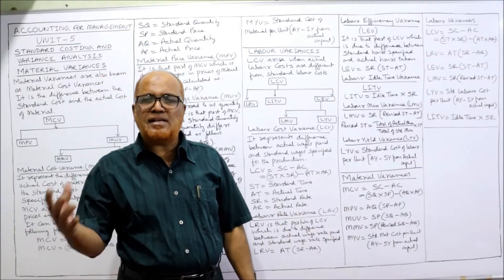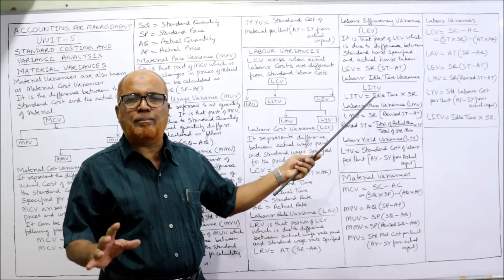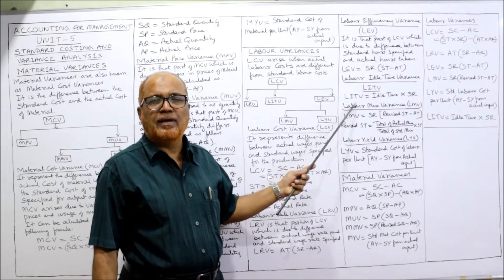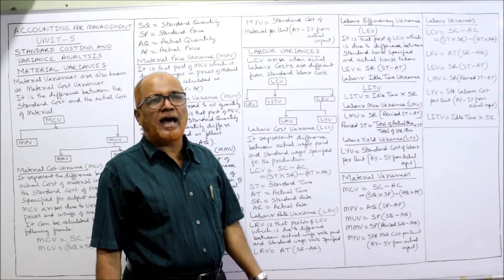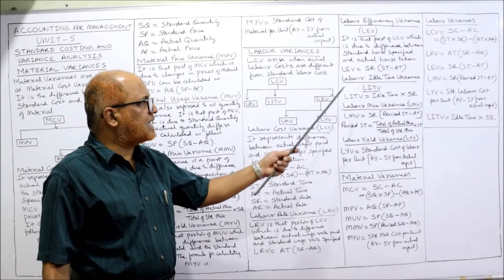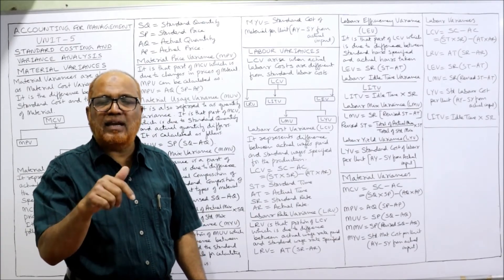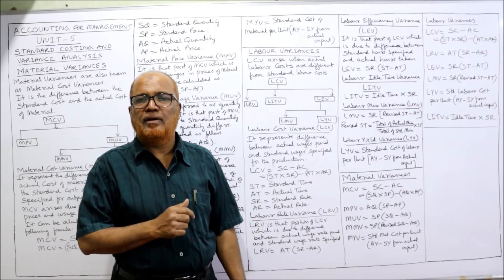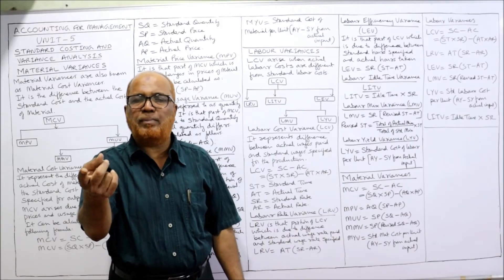Labor idle time variance, LITV. Sometimes idle time is given in a problem — if there is abnormal idle time, this variance will arise, but not in every problem. Formula: LITV = Abnormal Idle Time × Standard Rate. This variance will always be adverse. Remember: a positive variance is favorable, a negative variance is adverse. Until we specify whether it is favorable or adverse, the variance alone does not convey full meaning.